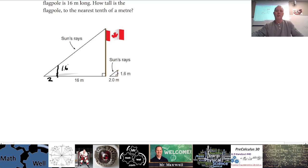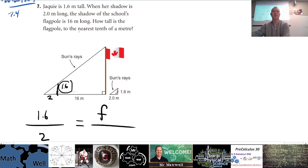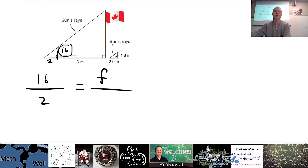So what's a ratio that we could do? Well, we could do 1.6, Jackie's height, over Jackie's shadow equals flagpole, let's make it F, over 16 meters is the shadow, right? The shadow of the flagpole is 16.